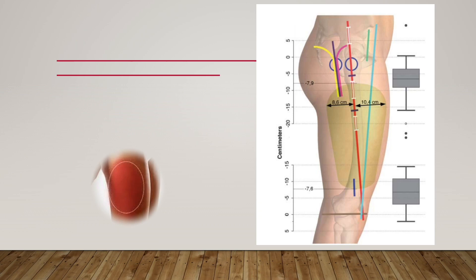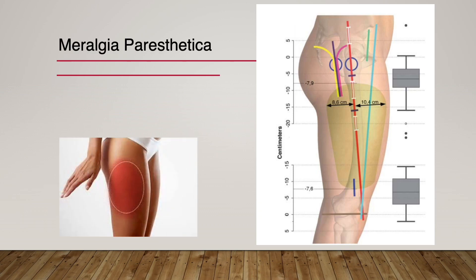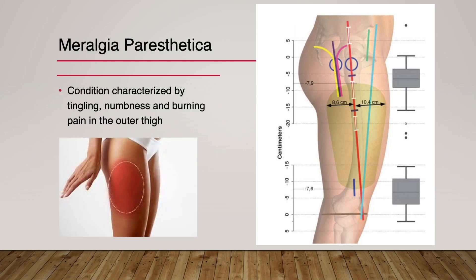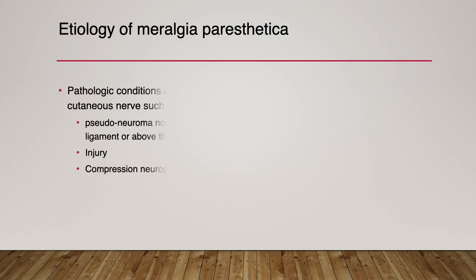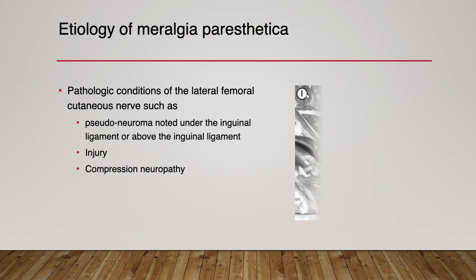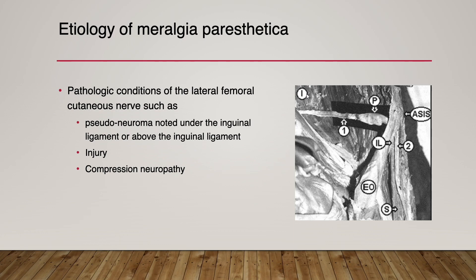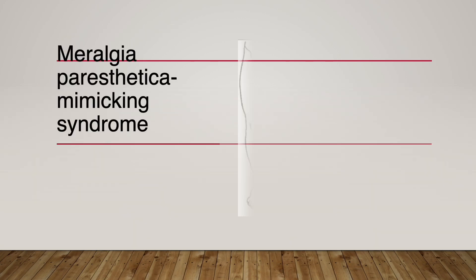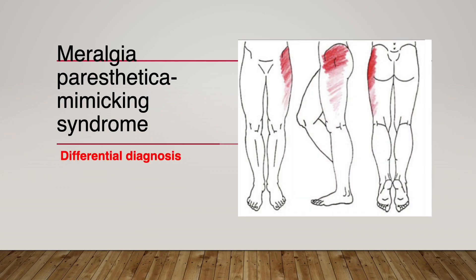Meralgia Paresthetica is a condition characterized by tingling, numbness, and burning pain in the outer thigh. The neuropathy of the lateral femoral cutaneous nerve is regarded as a leading cause. However, several disease entities mimic Meralgia Paresthetica, making clinical decision-making challenging.